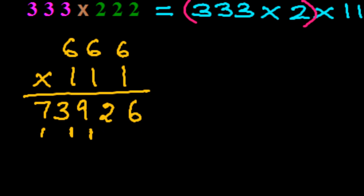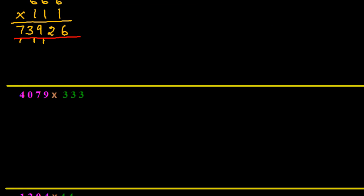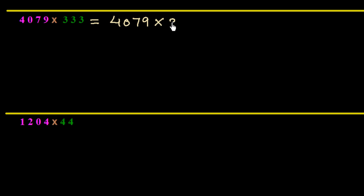In this way we can find the multiplication of numbers with similar digits. Now one more example: 4079 multiplied by 333. First we factorize 333 into 3 × 111, so we write 4079 × 3 × 111. Now we multiply 4079 × 3.